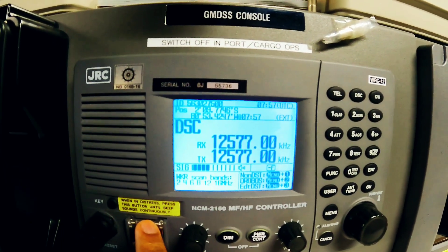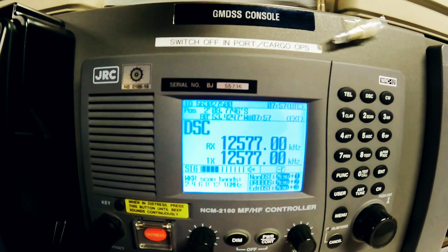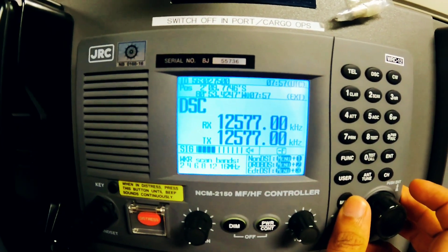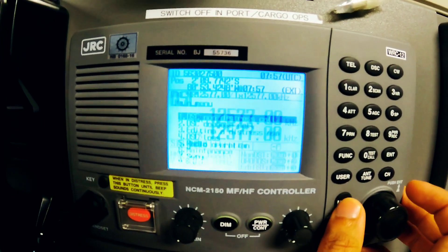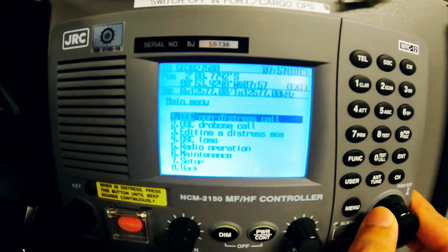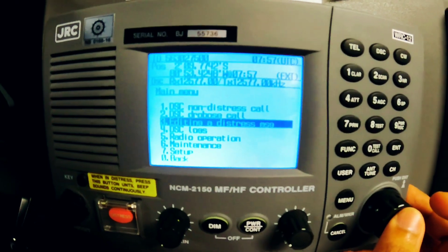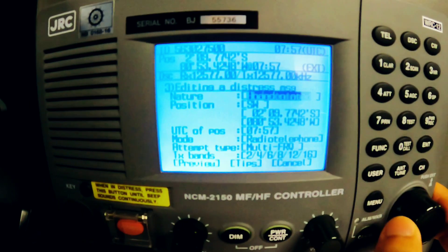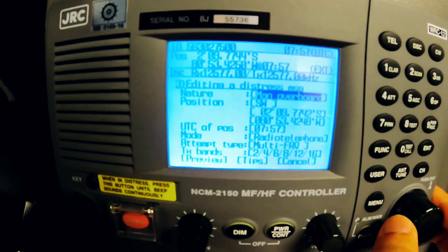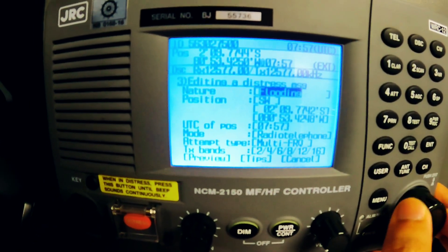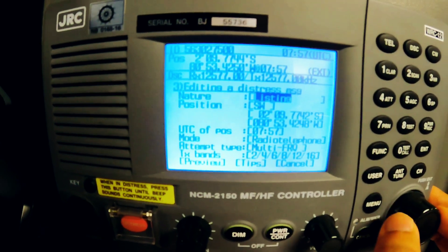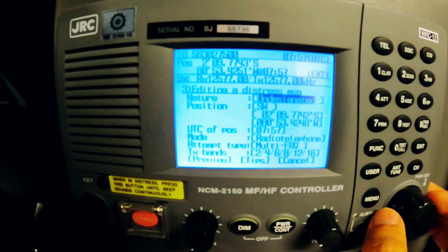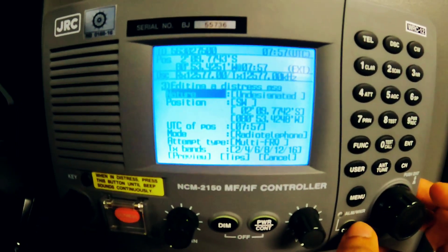Now to send a designated distress message similar to VHF, go to menu and then the third option, editing a distress message. Here you can see nature. Here are all the options: man overboard, fire, flooding, collision, grounding, listing, sinking, disabled, or undesignated. A lot of options in the nature.